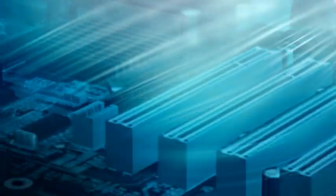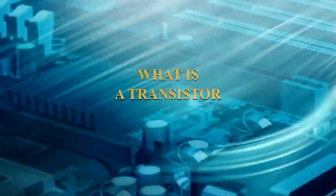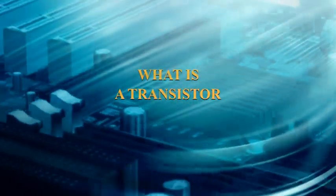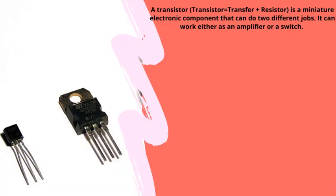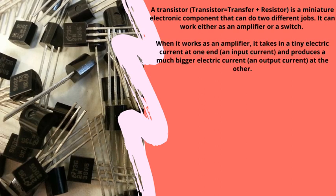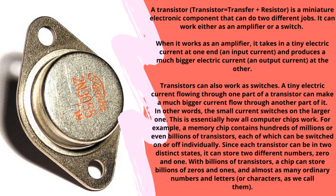What is a transistor? A transistor is a miniature electronic component that can do two different jobs. It can work either as an amplifier or a switch. When it works as an amplifier, it takes in a tiny electric current at one end — an input current — and produces a much bigger electric current, an output current, at the other end.